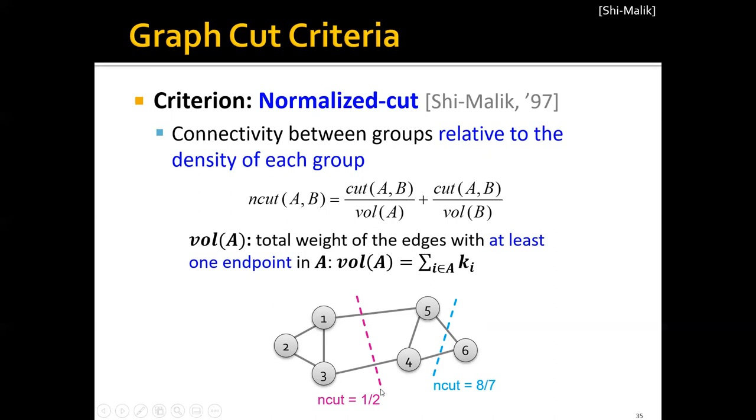then the normalized cut of this partition would be 1 over 2. But if we cut this graph here and assign nodes 1, 2, 3, 4, 5 into one group and assign node 6 into the other group, then the normalized cut of this partitioning will be 8 over 7.